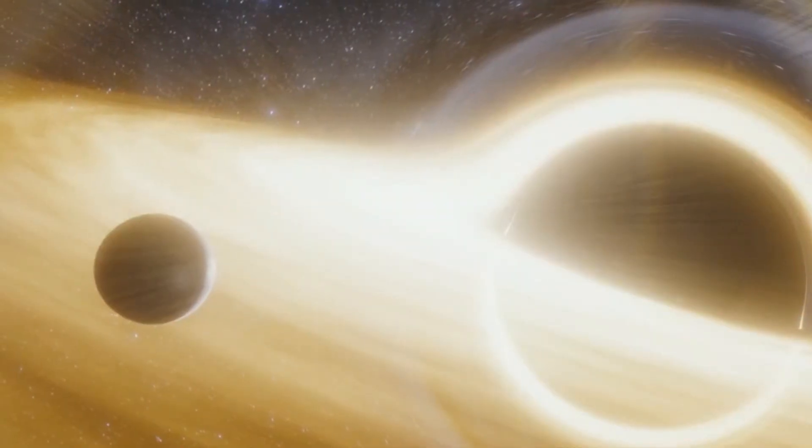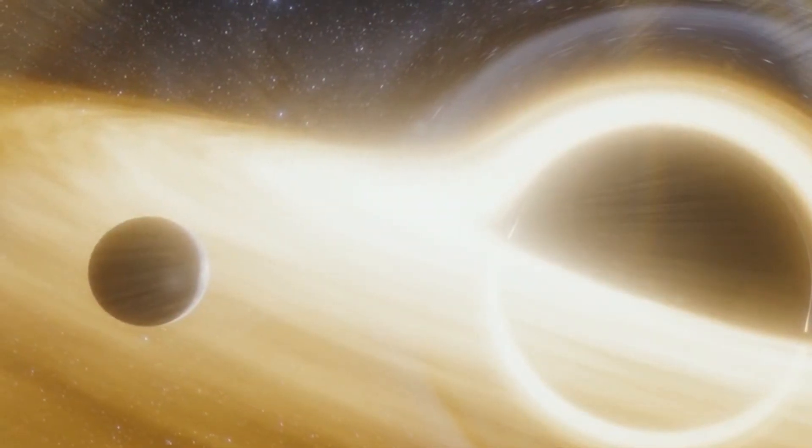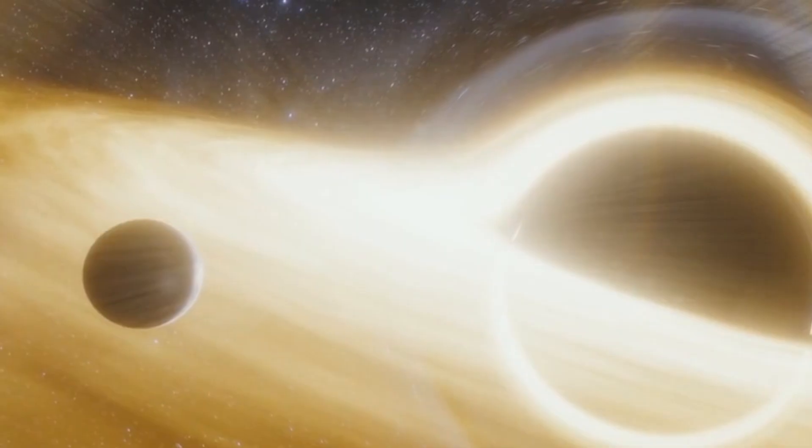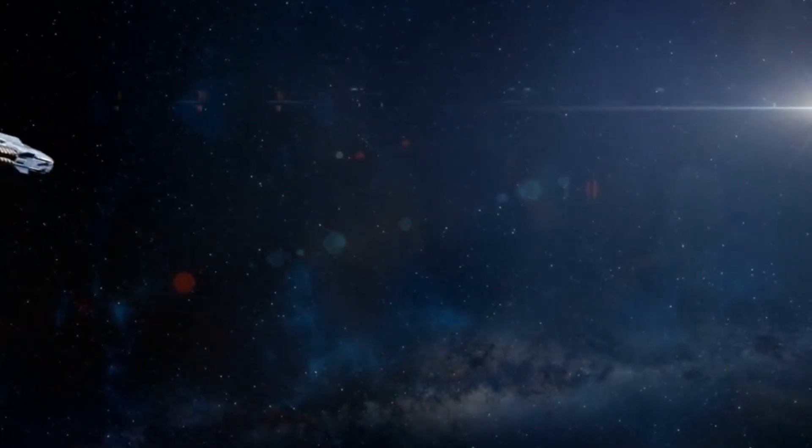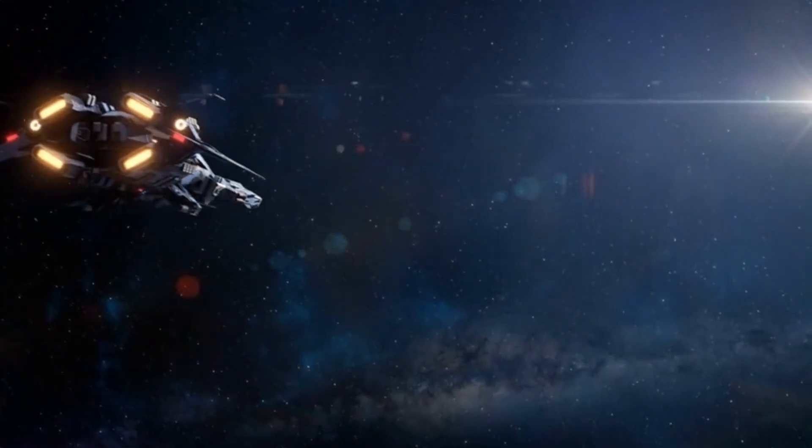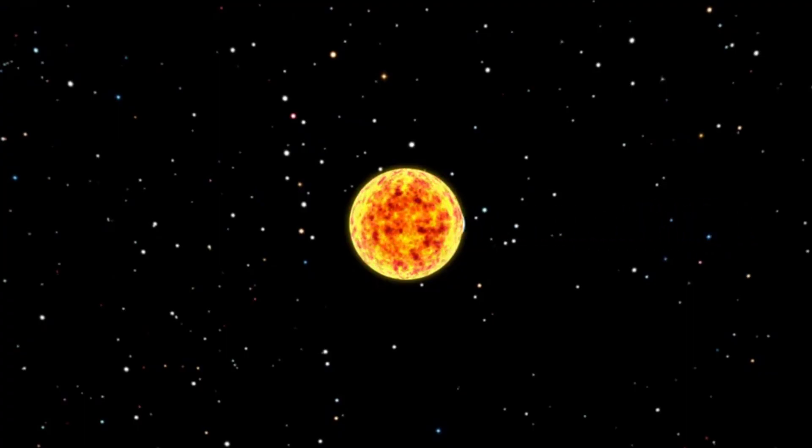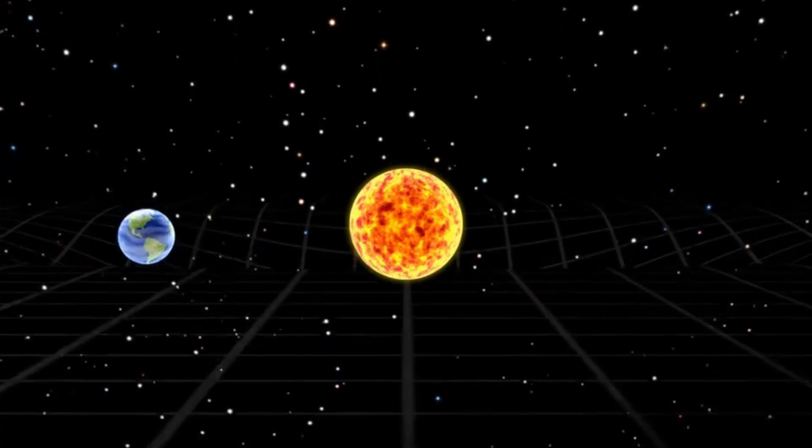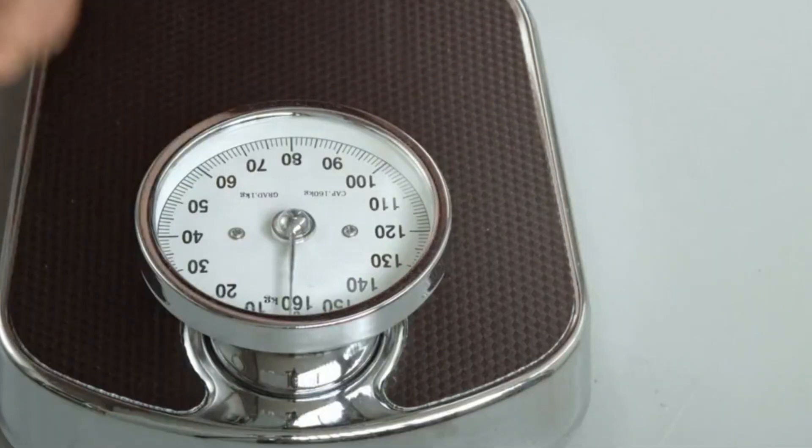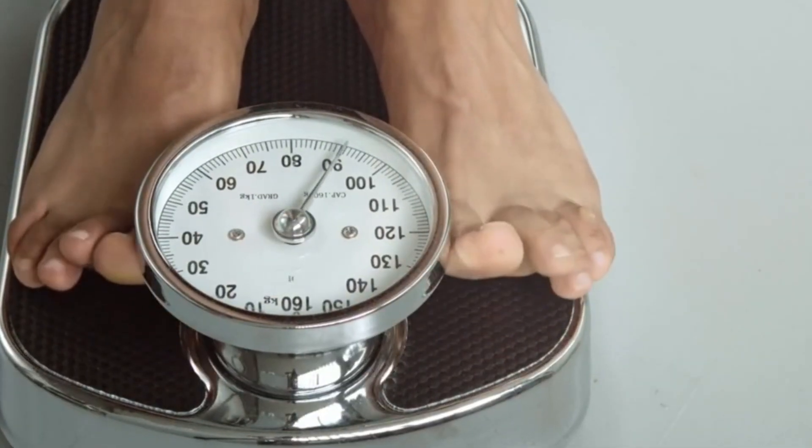Objects like planets, stars, and black holes cause this fabric to curve. The more massive an object, the more it bends space-time around it. Gravity, in essence, is the result of this bending. The greater the mass, the stronger the gravitational pull.